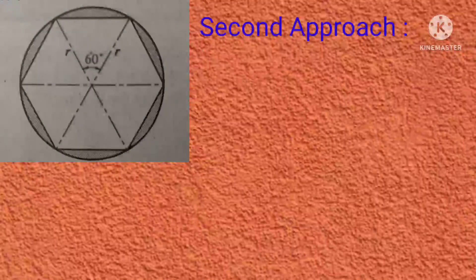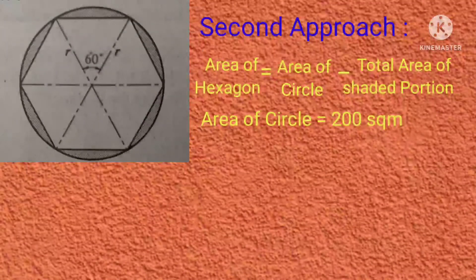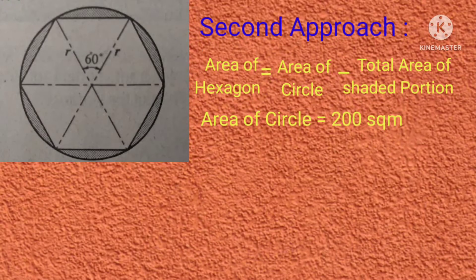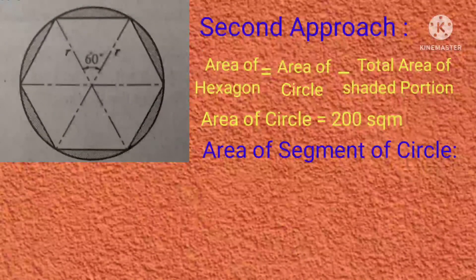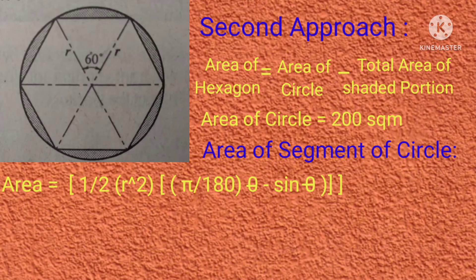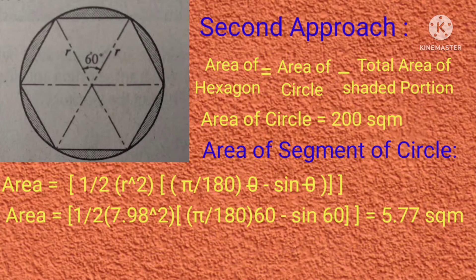Now we will solve the problem using the second approach. We compute the area of the shaded portion, which is the area of a segment of the circle, then multiply it by 6 to get the total shaded area, and subtract from the circle's area of 200 square meters. The formula for the area of a circular segment is: Area = ½ × r² × (π/180 × θ − sin θ). Substituting r = 7.98 and θ = 60°: